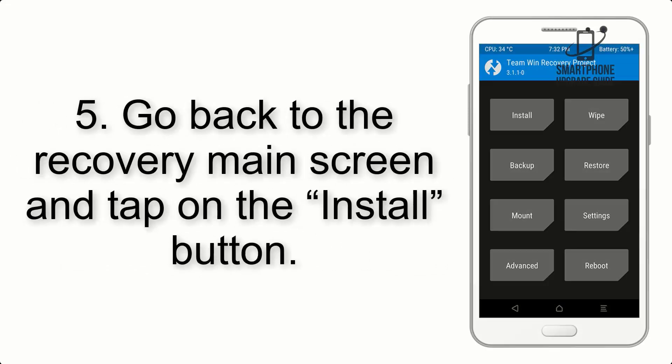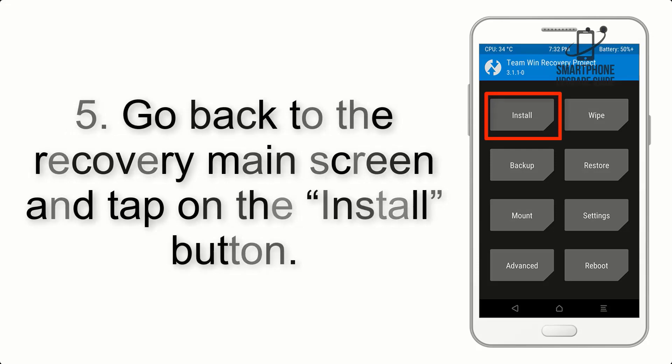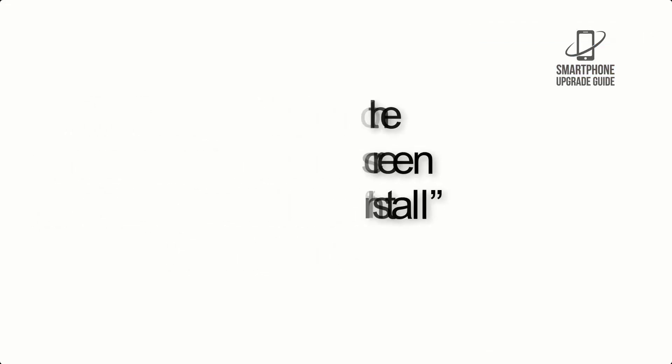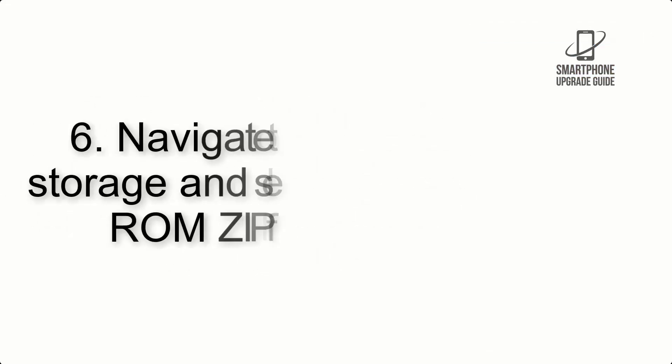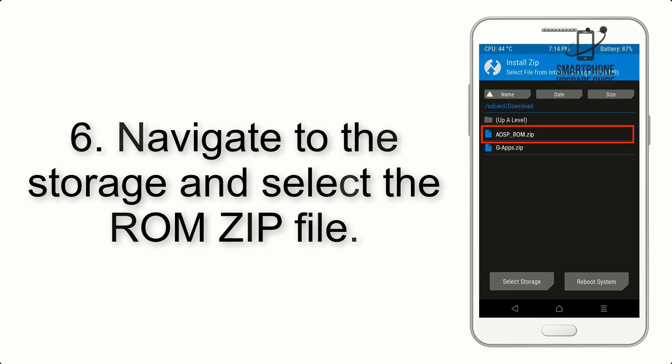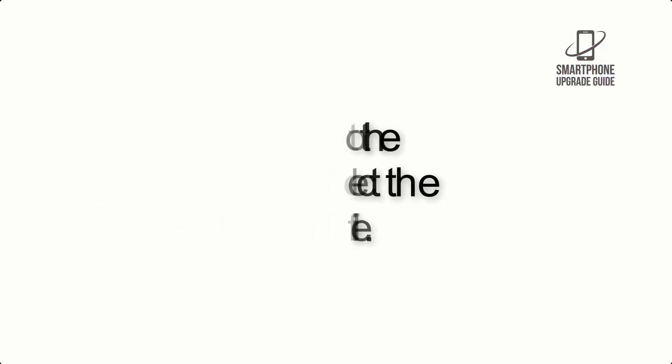Step 5: Go back to the Recovery main screen and tap on the Install button. Step 6: Navigate to the Storage and select the ROM ZIP file.